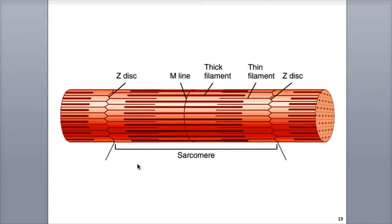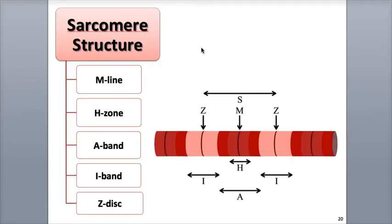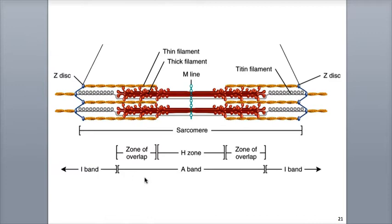Distinct zones and bands can be observed in the sarcomere based upon the arrangement of the thick and thin filaments. These distinct arrangements are recognizable in the sarcomere and serve as useful landmarks. These distinct regions include the M-line, H-zone, A-band, I-band, and the Z-discs. In this diagram, we see one sarcomere bordered on either side by the Z-discs.